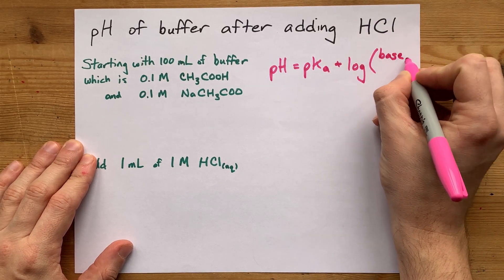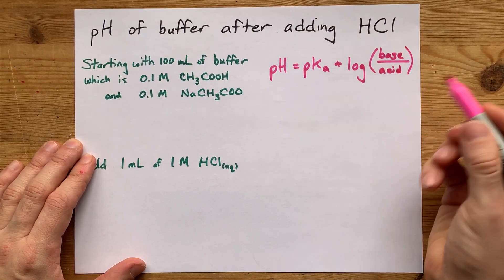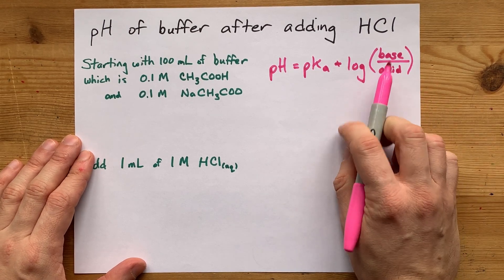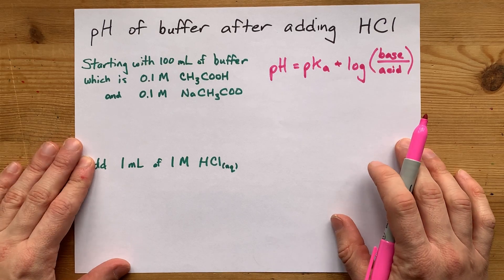Now lots of people will use the formula with concentration terms for base over acid, but the secret of the Henderson-Hasselbalch equation is that you can also use the number of moles of base and acid in this equation as well.